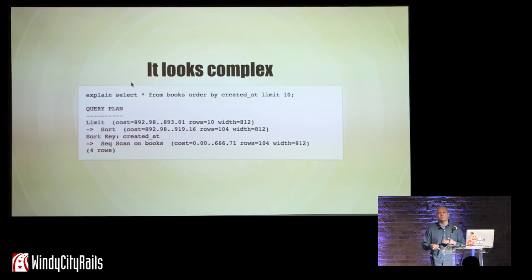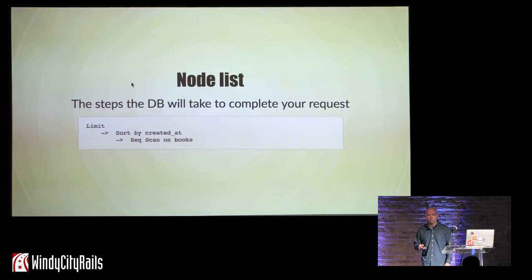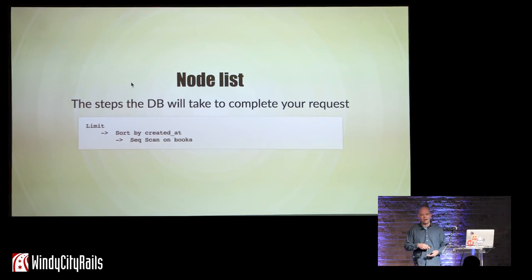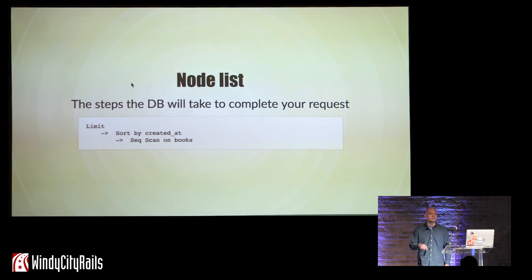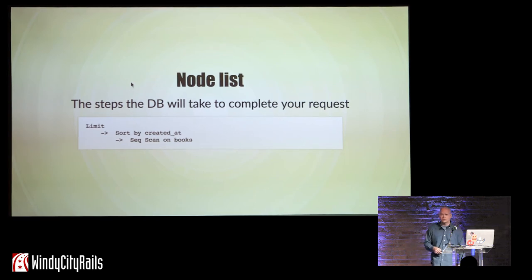This is the type of stuff that the Rails logs will spit out if a query is slow in development. You might see something like this in your log files. It's really easy to ignore because it just looks like a bunch of computer garbage. But it's pretty simple — just very dense. So let's break it down. The first part of the query plan is a thing called a node list, which is just the to-do list the database makes for how it's going to perform the thing you asked it to do. We read it from bottom to top.